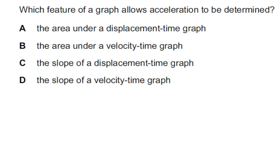Which feature of a graph allows acceleration to be determined? The answer is D — it's the slope of a velocity-time graph.